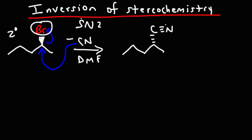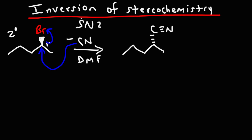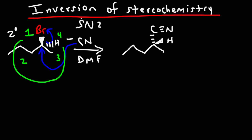The bromine was in the front; now the nucleophile is in the back. If bromine is in the front, that means the invisible hydrogen is in the back, and here the hydrogen is in the front. So if we were to determine the configuration of the chiral center: this will be group number one, the propyl group will be number two, this is number three, and H is number four. Counting from one to two to three goes counterclockwise, which gives us the S configuration.